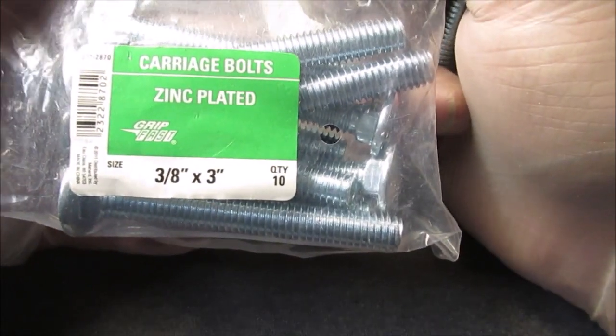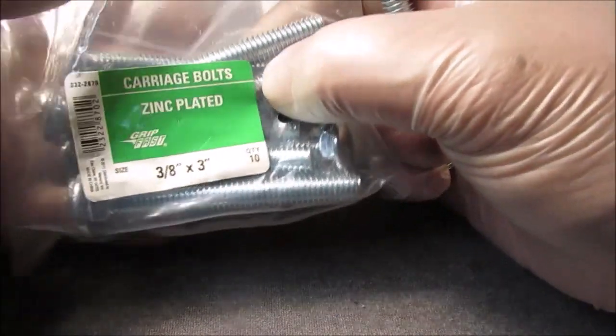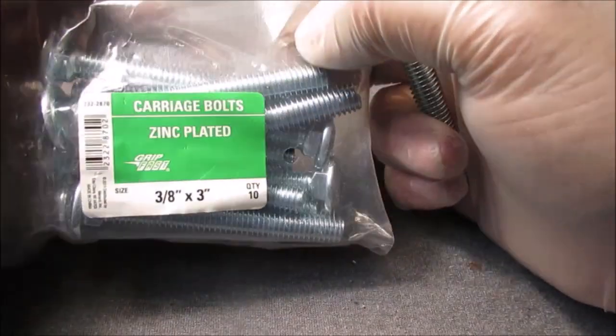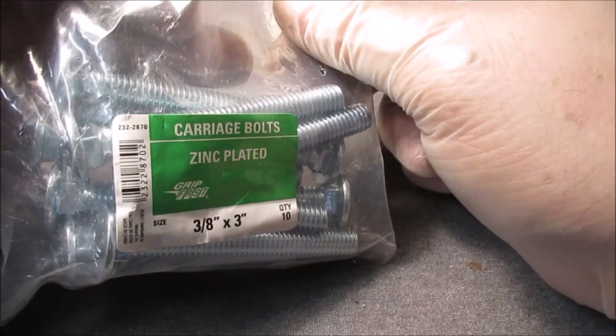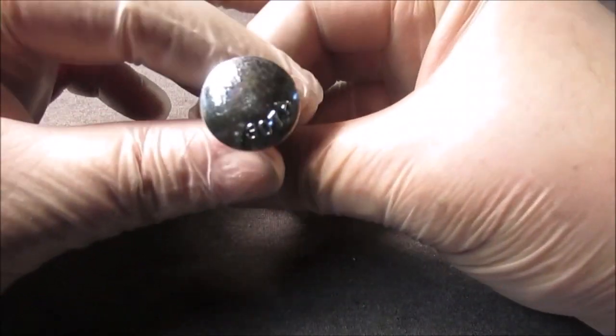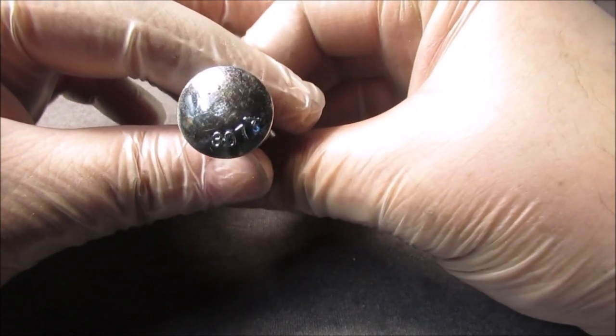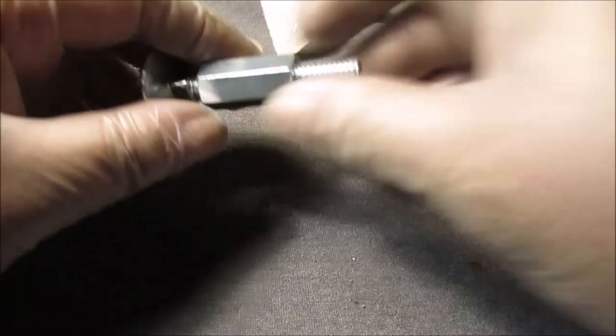A package of 10 is probably four to five dollars. Don't buy the galvanized - they're always nasty and you're not going to have as good metal either. That's my preference: get the zinc plated. When you grind it off you're going to polish the metal anyway.